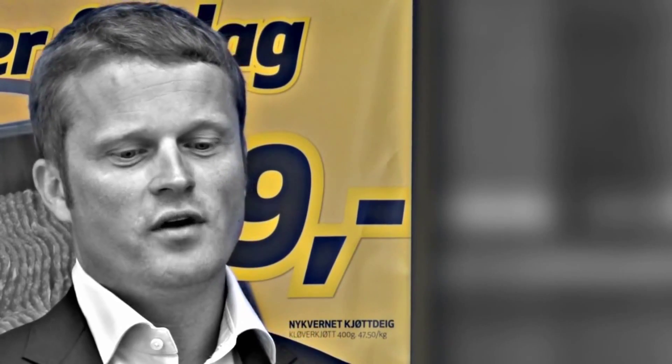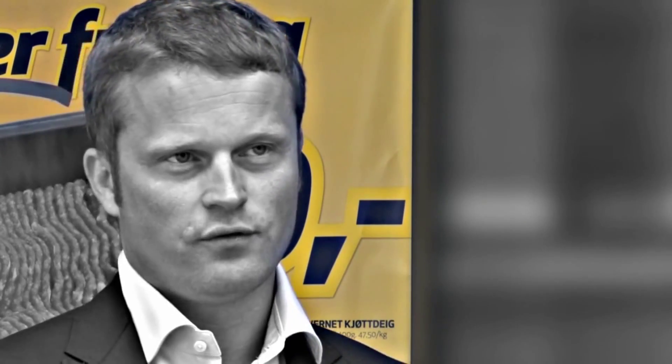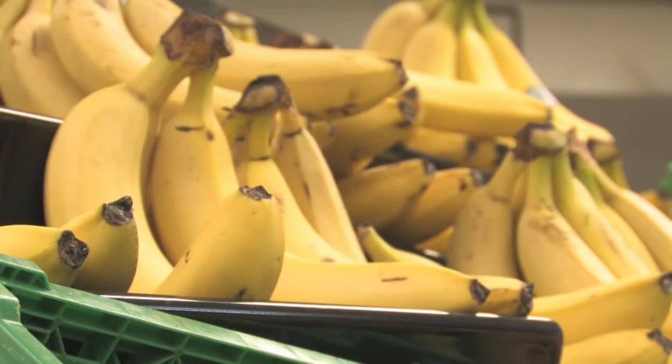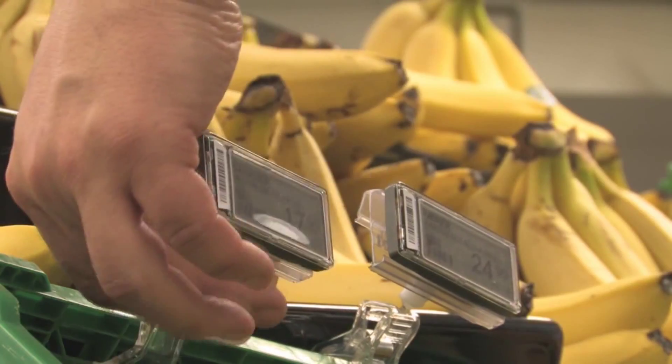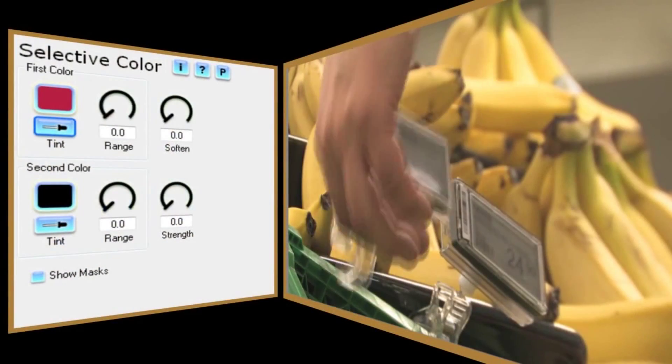Let's start by working our way through a simple example to explain the different controls in the Selective Color plugin. We'll use this clip of a bunch of bananas on display in a grocery store. You can see there are just seven controls in the plugin.